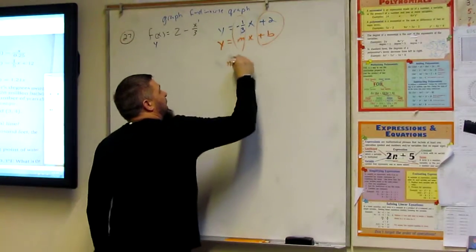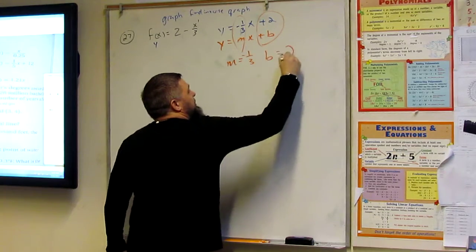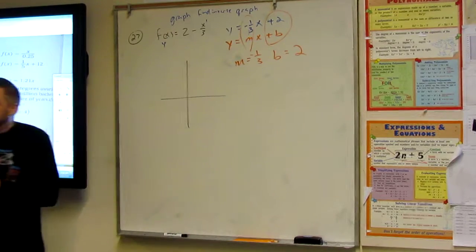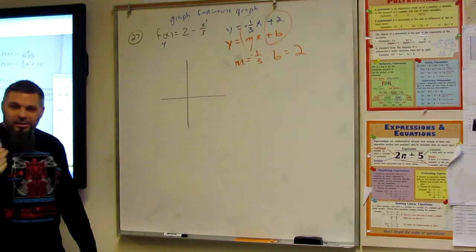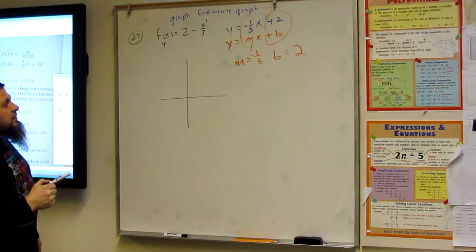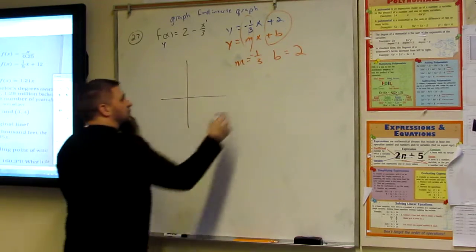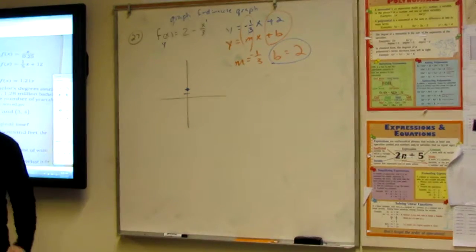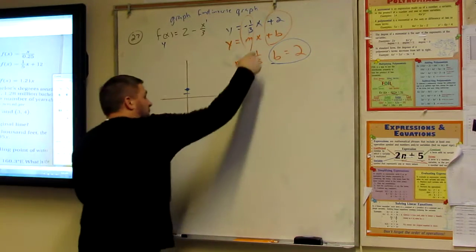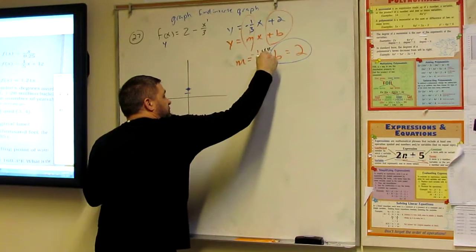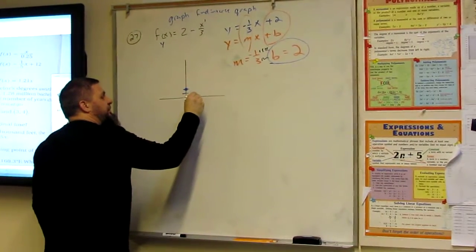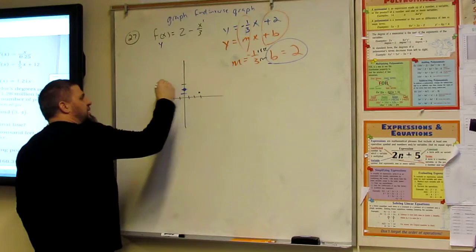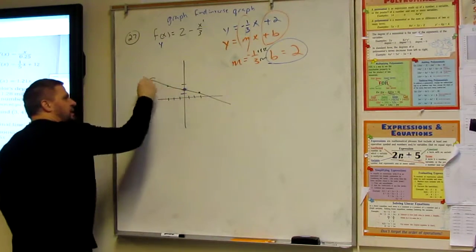So, I've got m is equal to one-third negative, and b is equal to 2. So, I'm going to graph this. I almost said a word I'm not supposed to say. So, I'm going to start at 2. And then, I'm going to go down 1, rise over run. I'm going to go down 1, and right 3. Or I can go up 1 and left 3. Either way, I've got a line, right?